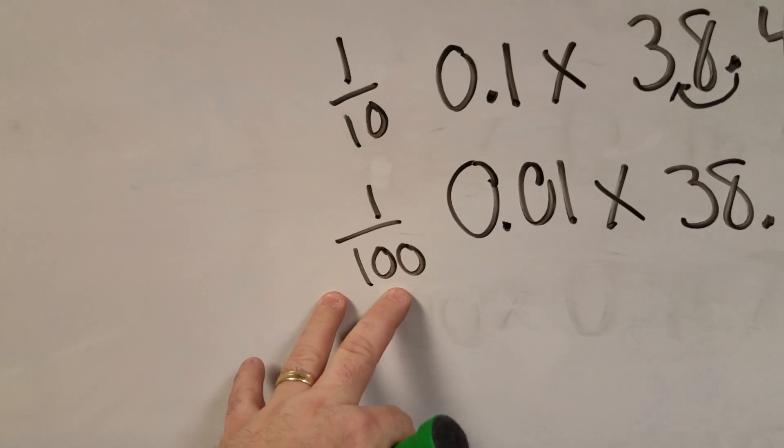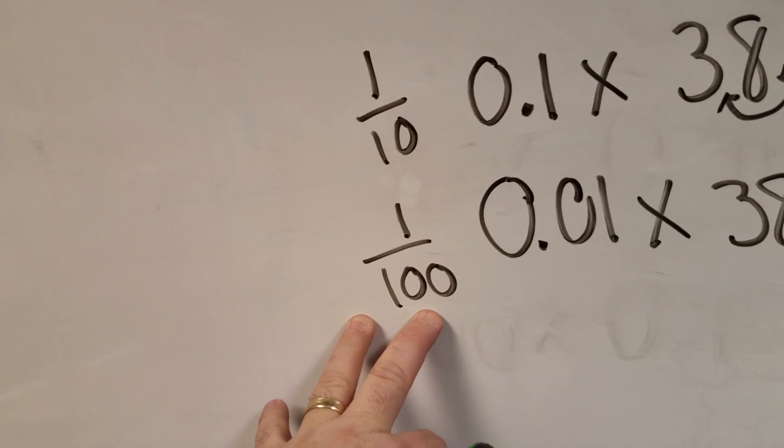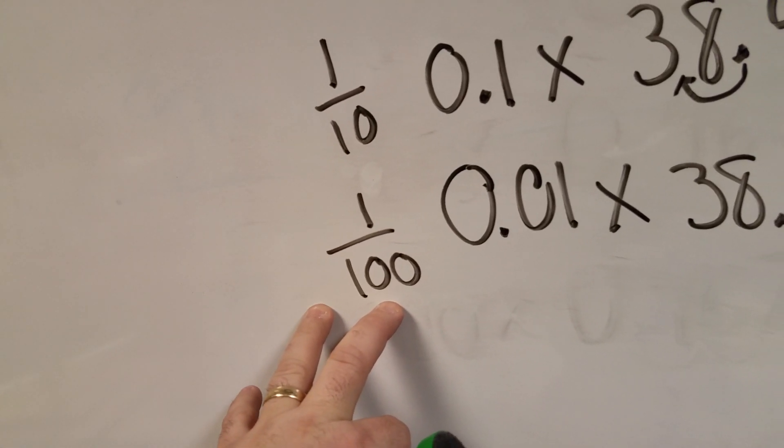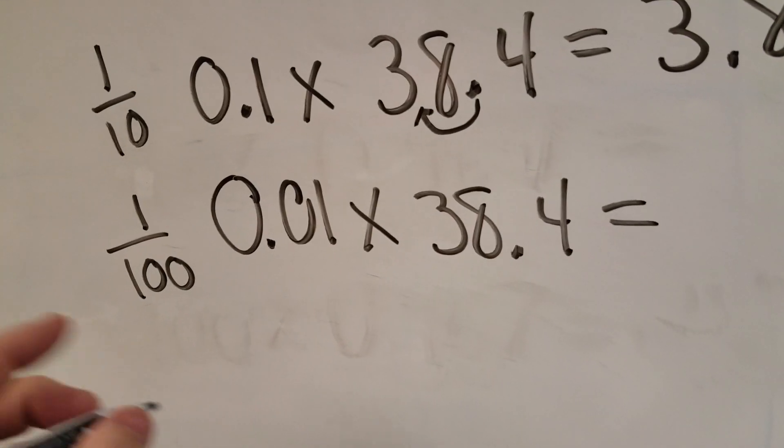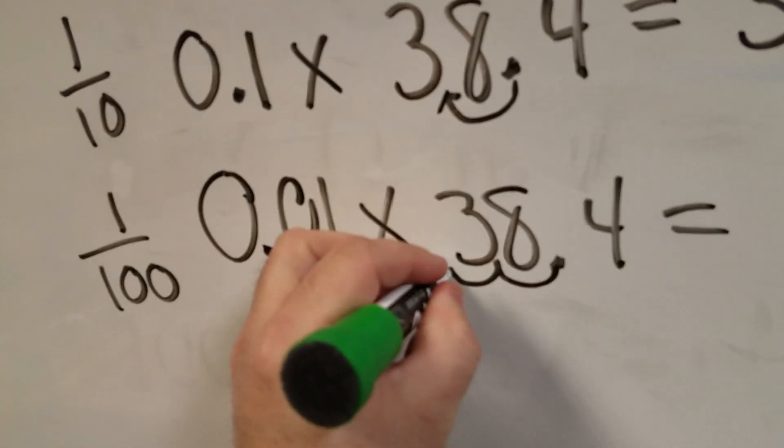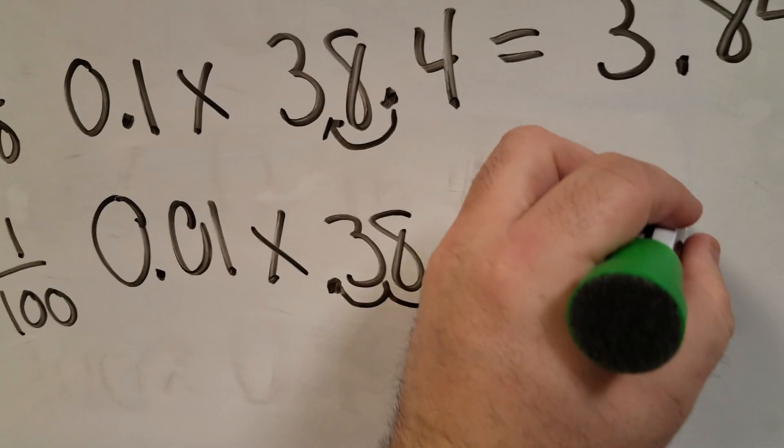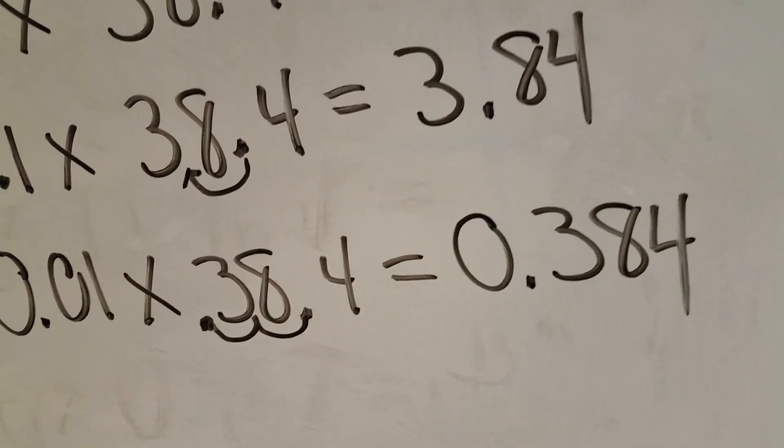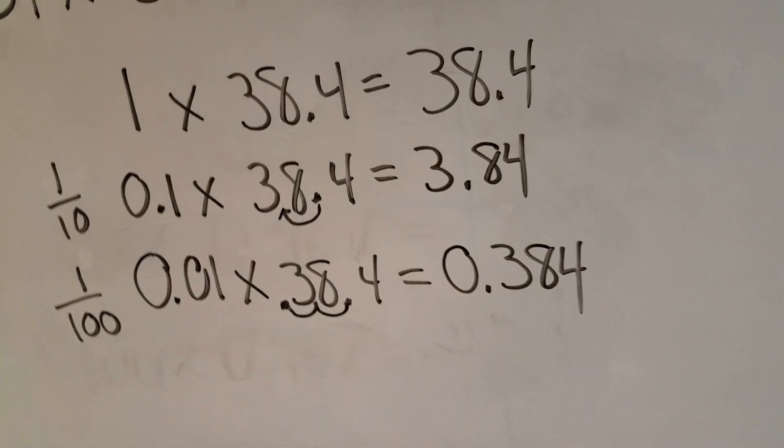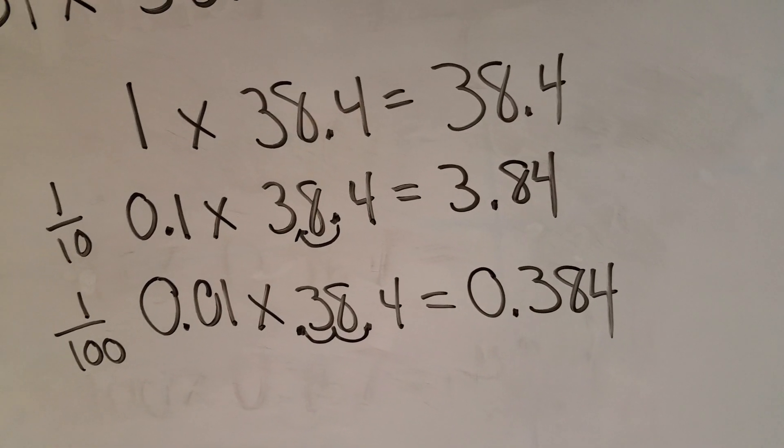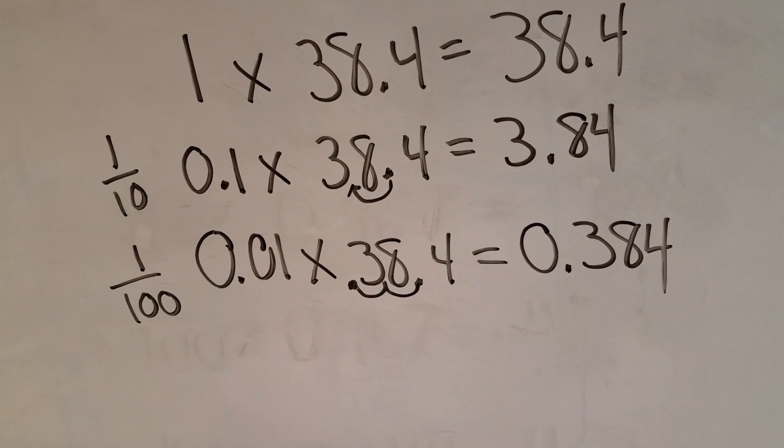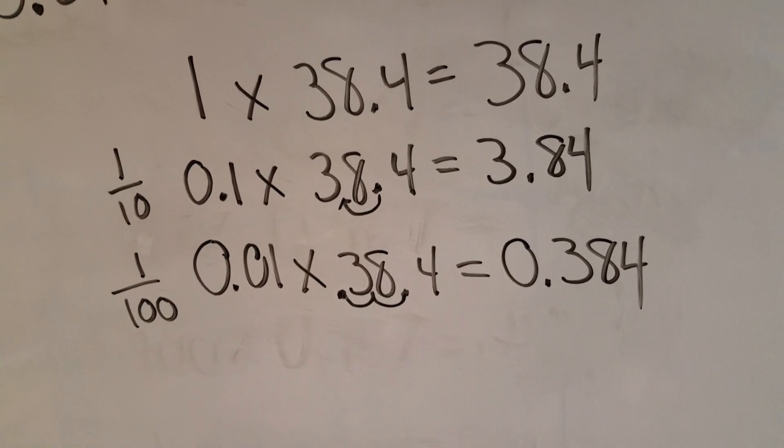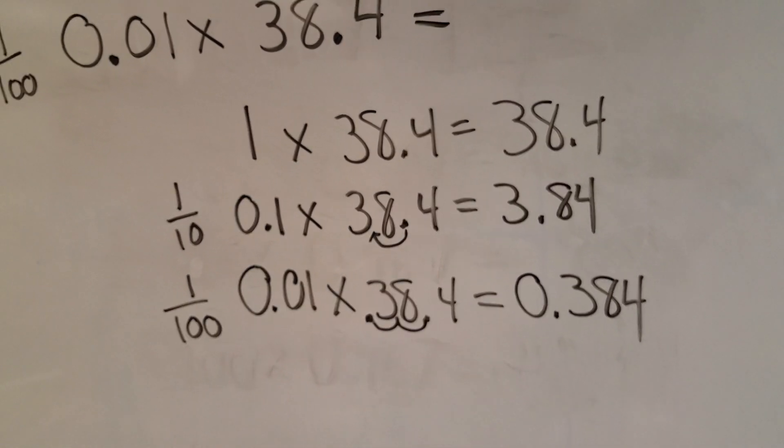So that's two powers of 10 that it's being reduced by. And when it's being reduced by two powers of 10, I'm going to move my decimal two times over to the left. And I got 384 thousandths. So one-hundredth of 38.4 is 384 thousandths. All patterns.